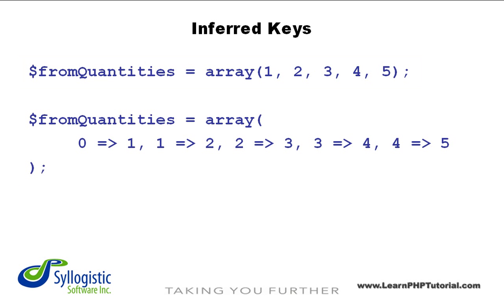This means that the key for the first value, 1, would be 0. Likewise, the key for the second value, 2, would be 1, and so on. Ordinarily, there's no need to specify the keys when they're just going to be sequential numbers.